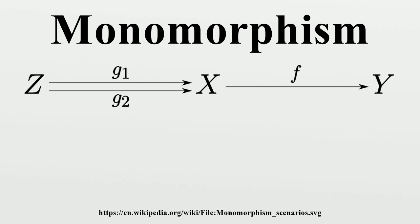In the more general setting of category theory, a monomorphism is a left cancellative morphism, that is, an arrow f: X to Y such that, for all morphisms g1, g2: Z to X.